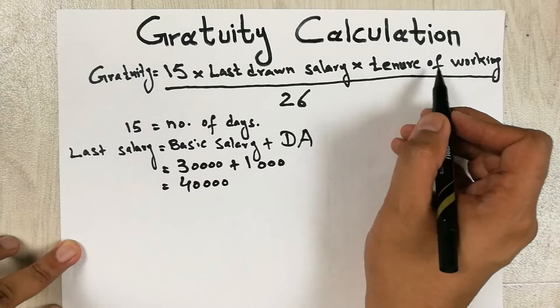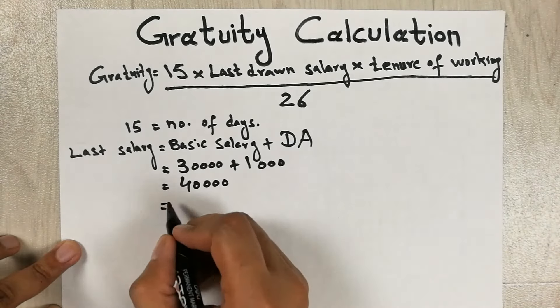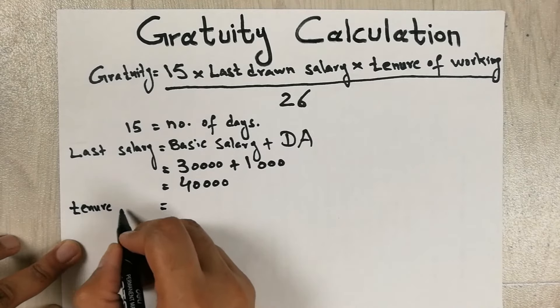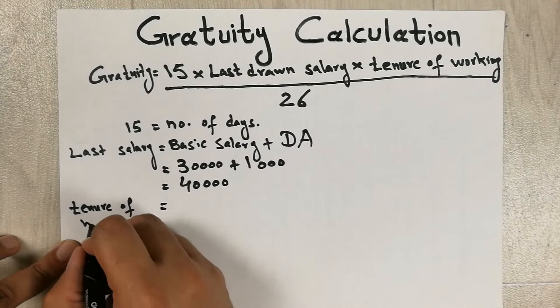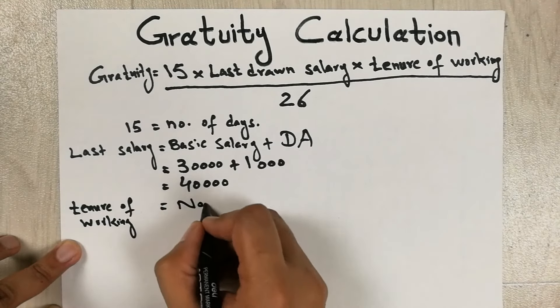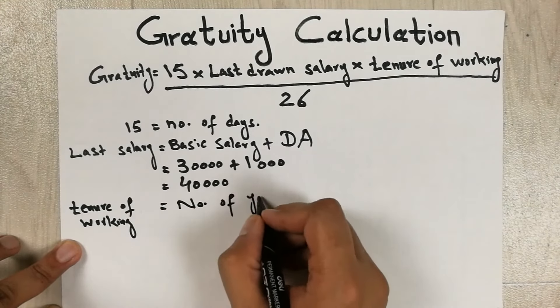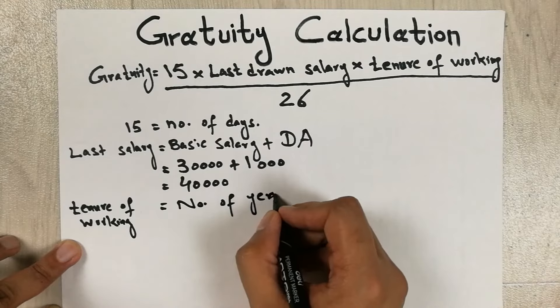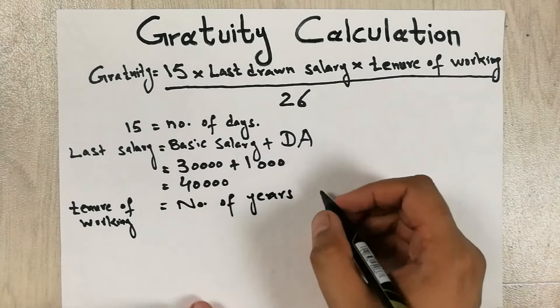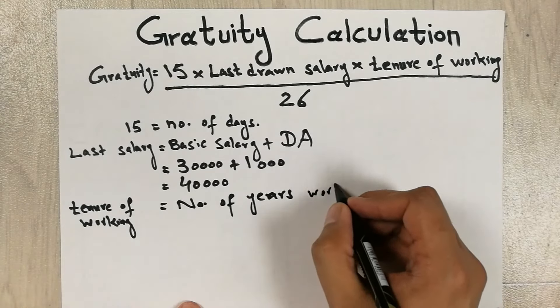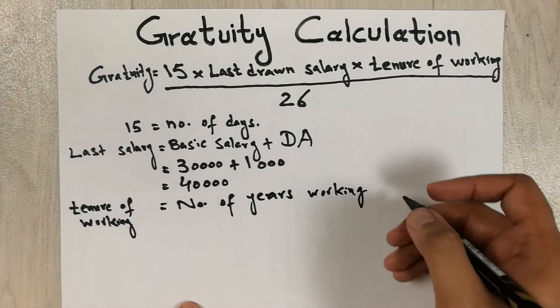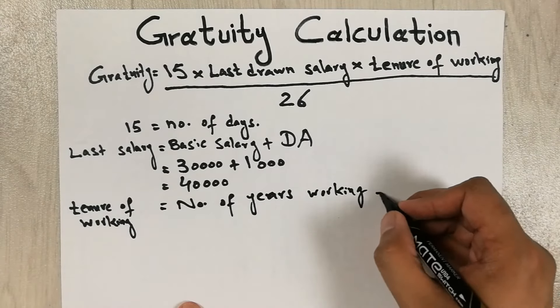Now let's move to the next part which is tenure of working. So guys, tenure of working is the number of years that you work in a company or an organization or in a government job. So let's say the number of years that you work is 10, so 10 years you work.